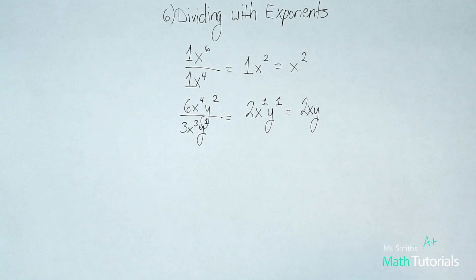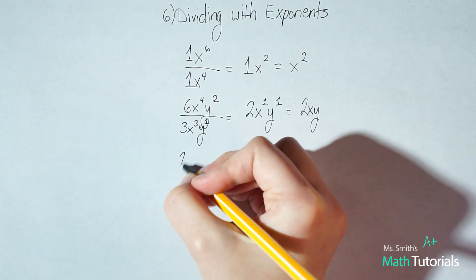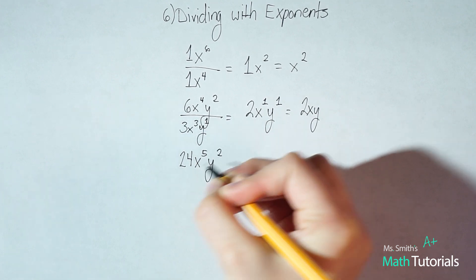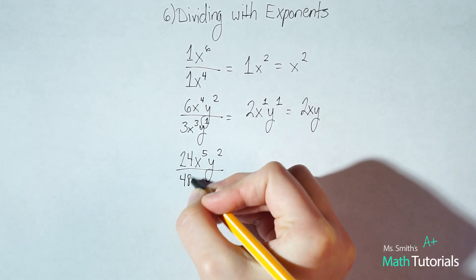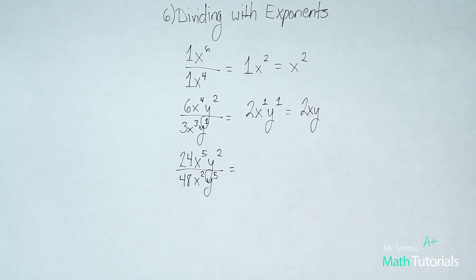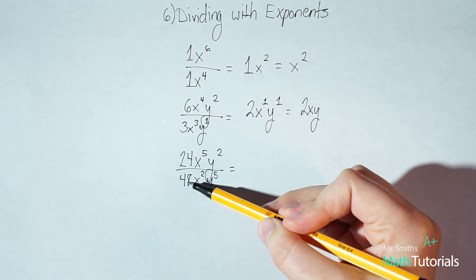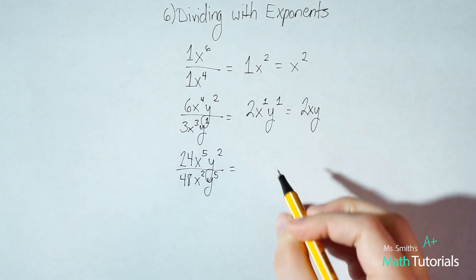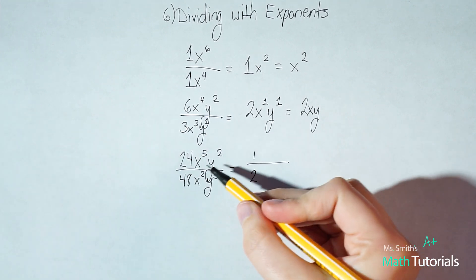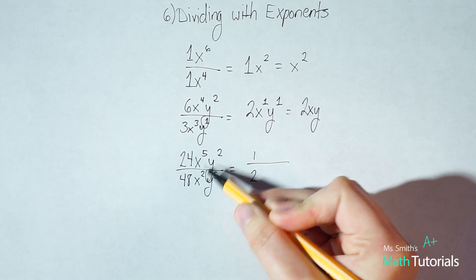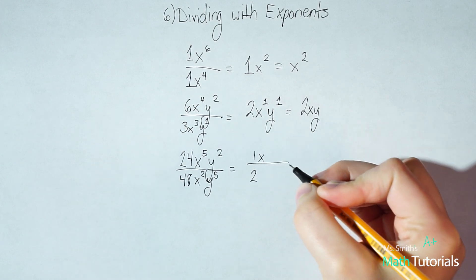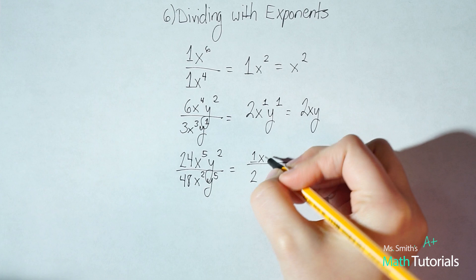Sometimes our answers might not come out so perfectly. We might get fractions and that's okay. So we could have 24 x to the fifth y to the second divided by 48 x to the second y to the fifth. Okay, so again we want to simplify our whole numbers as far as we can. 24 divided by 48 is actually a fraction. It's one half. And then we've got x to the fifth divided by x to the second. We always start top to bottom. So five minus two. And we always write our answer on top is five minus two is three.